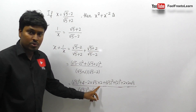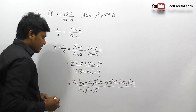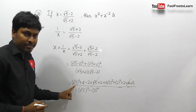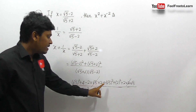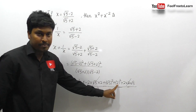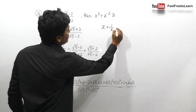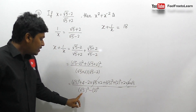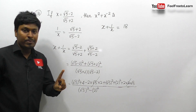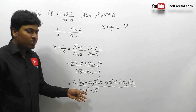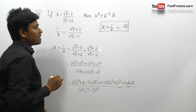The remaining numerator terms: 5+4+5+4 = 18. The denominator is (√5)²-2² = 5-4 = 1. So x + 1/x = 18/1 = 18. Our target is x² + x⁻², which equals x² + 1/x². We know x⁻² = 1/x².